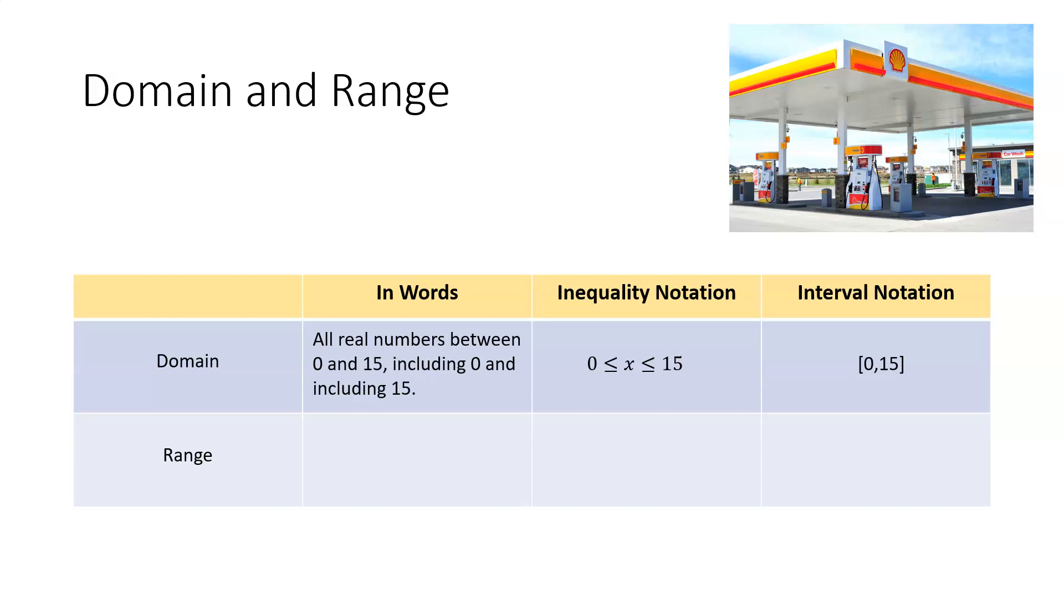Now the brackets denote that we are including 0 and we are including 15 in our domain. If 0 and 15 were not included in our domain, then we would set those numbers inside of a set of parentheses.